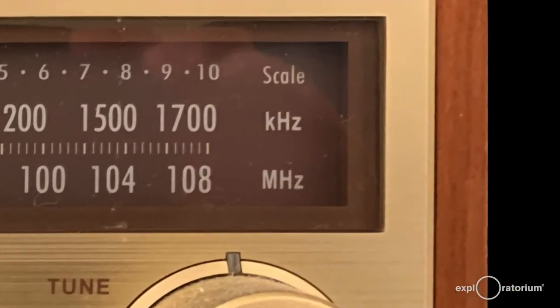If you look at the right end of the scale, you'll see that AM radio is measured in kilohertz, or thousands of vibrations per second, and FM is measured in megahertz, or millions of vibrations per second. Here, we're talking about the frequency of the radio wave that's carrying the musical information.